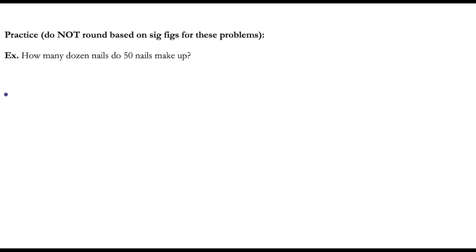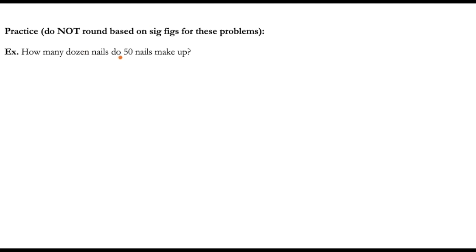So these are all words that represent numbers. Let's look at an example of how to convert using the setup we use for unit conversion. If I tell you I have 50 nails and I want to know how many dozen nails that is — I know you can do that in your head, but we're going to get quite a bit more complicated, so I want to make sure we have the correct setup. Using the crisscross swoosh method, you put nails on the bottom and dozen on top, because those are the units you're trying to get into.